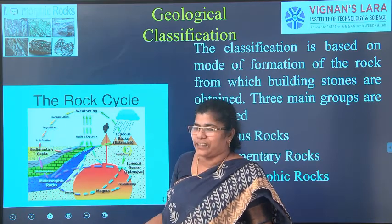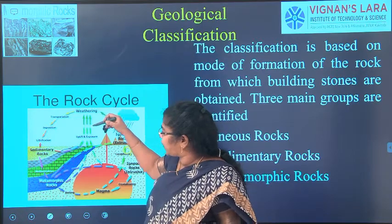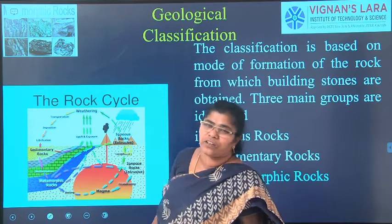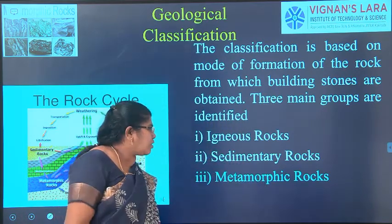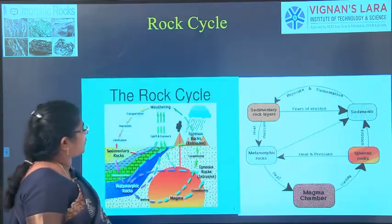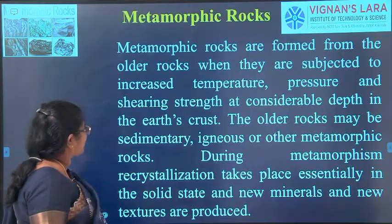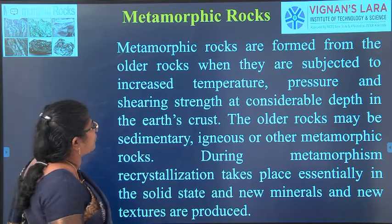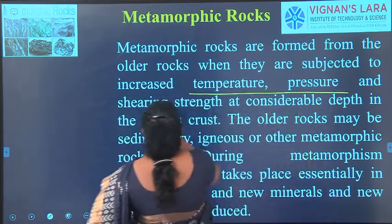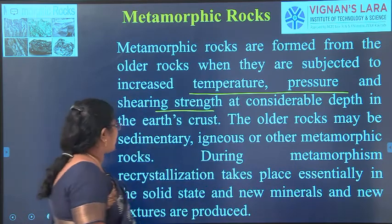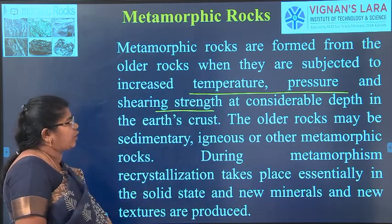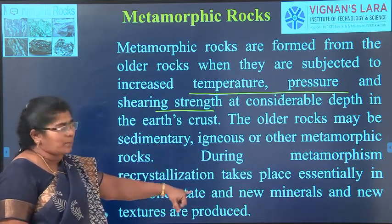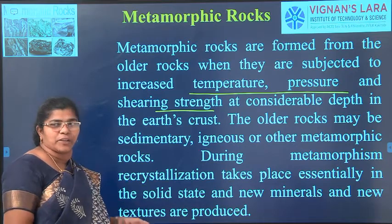Meta means complete change. So metamorphic rock does not consist of the properties of sedimentary rocks or igneous rocks — it is a newly formed rock. Metamorphic rocks are formed from older rocks subjected to increased pressure, temperature and shearing stress at considerable depth in the earth's crust. The older rocks may be sedimentary, igneous, or other metamorphic rocks. During metamorphism — which is the complete change — a recrystallization process takes place.